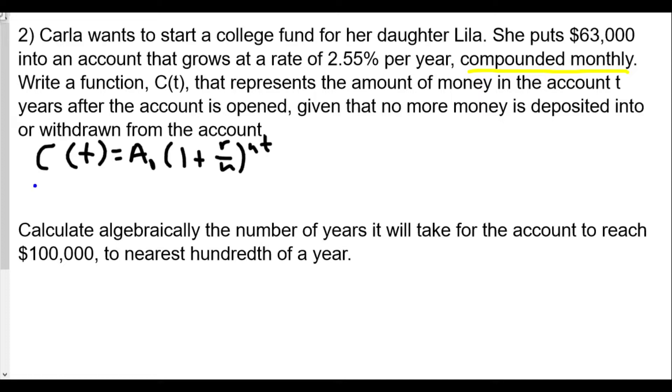Our initial value A sub zero would be $63,000, that's the initial deposit. For r we substitute 0.0255. When we enter this into a formula it will be as a decimal, not a percent.